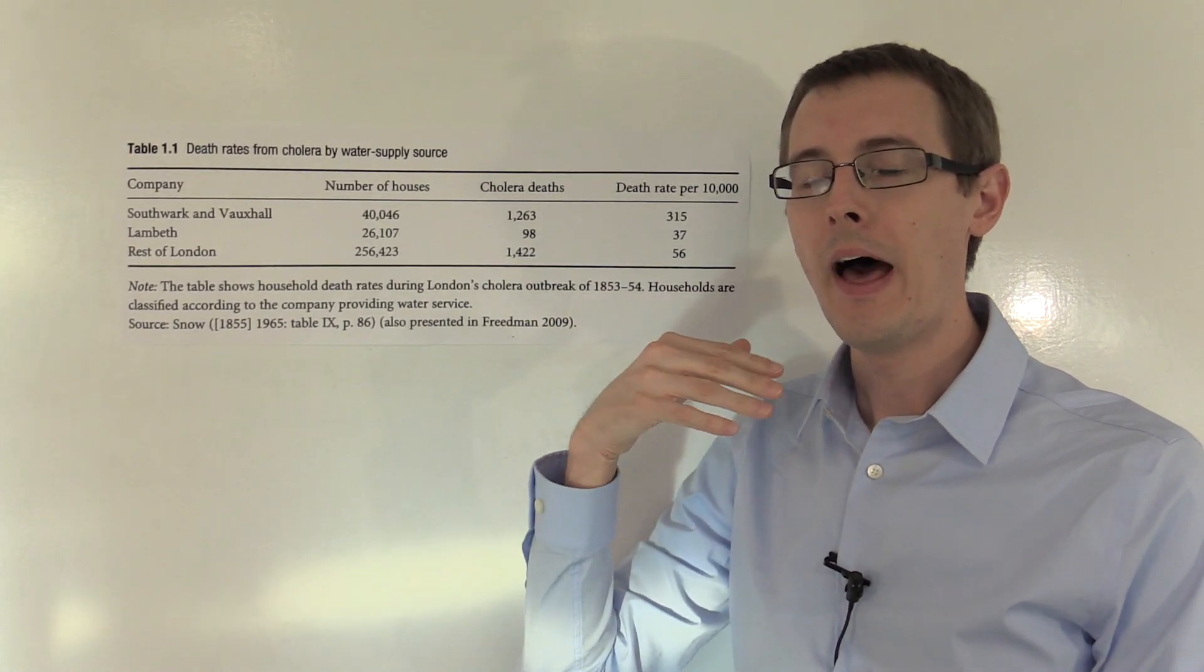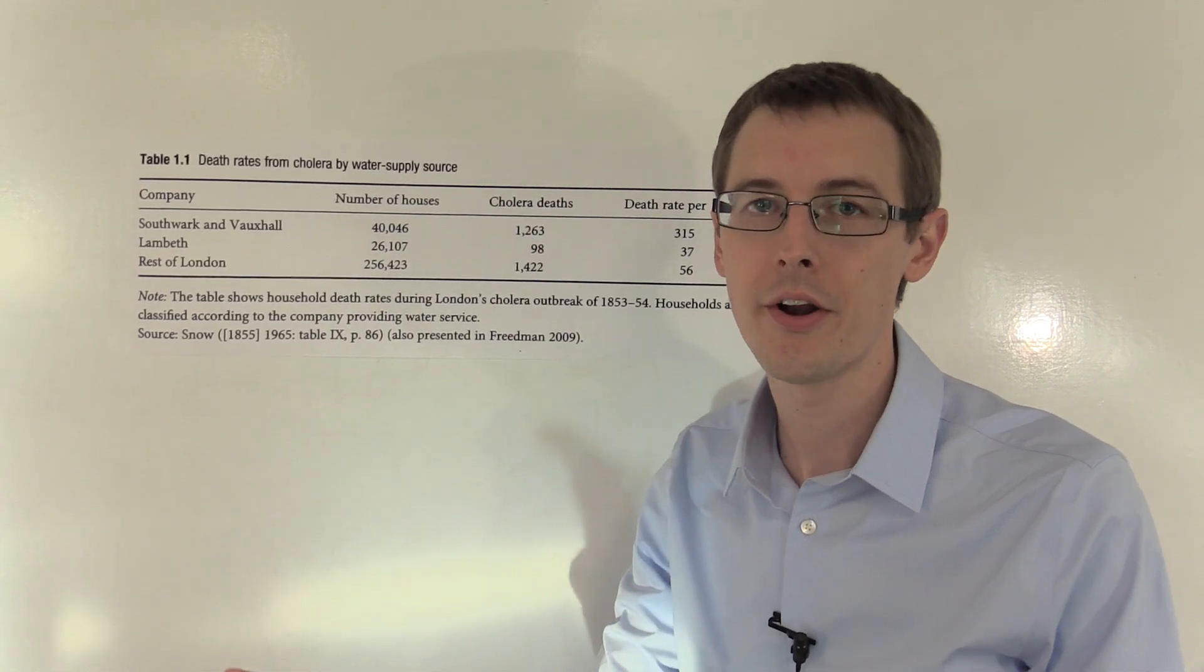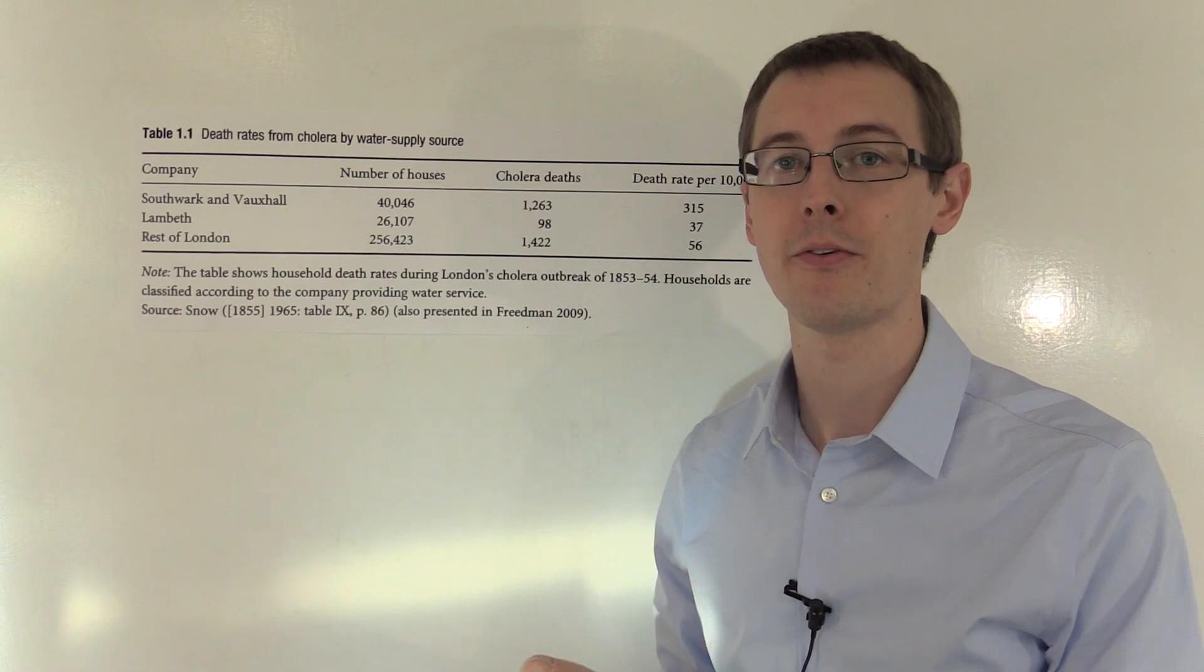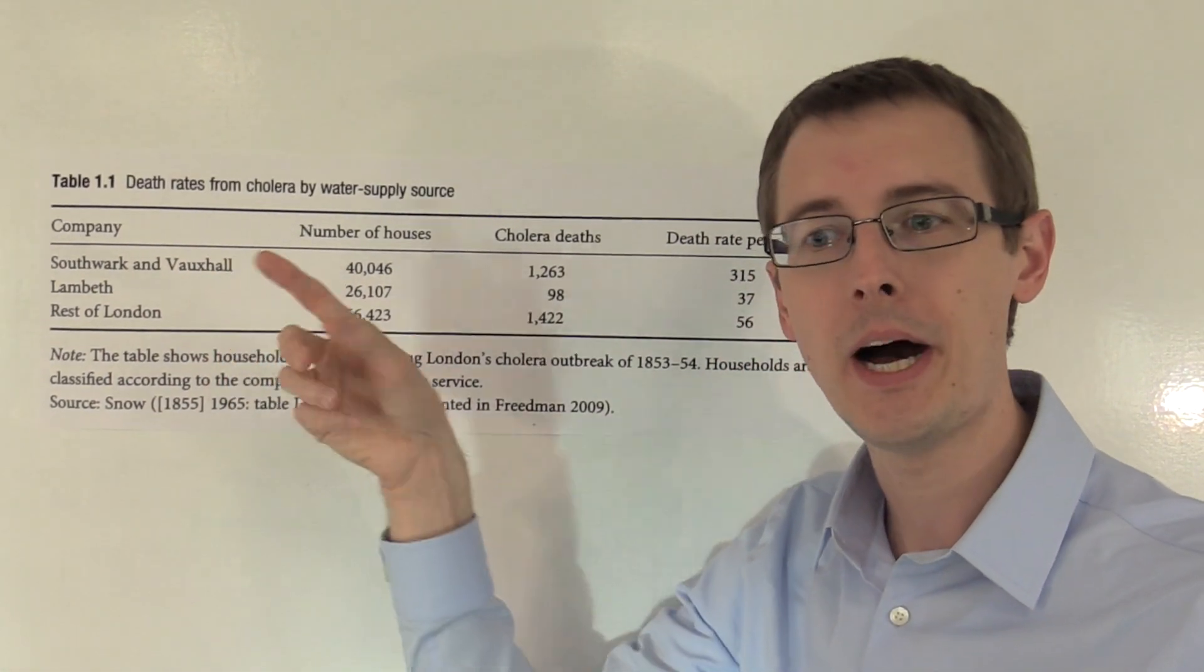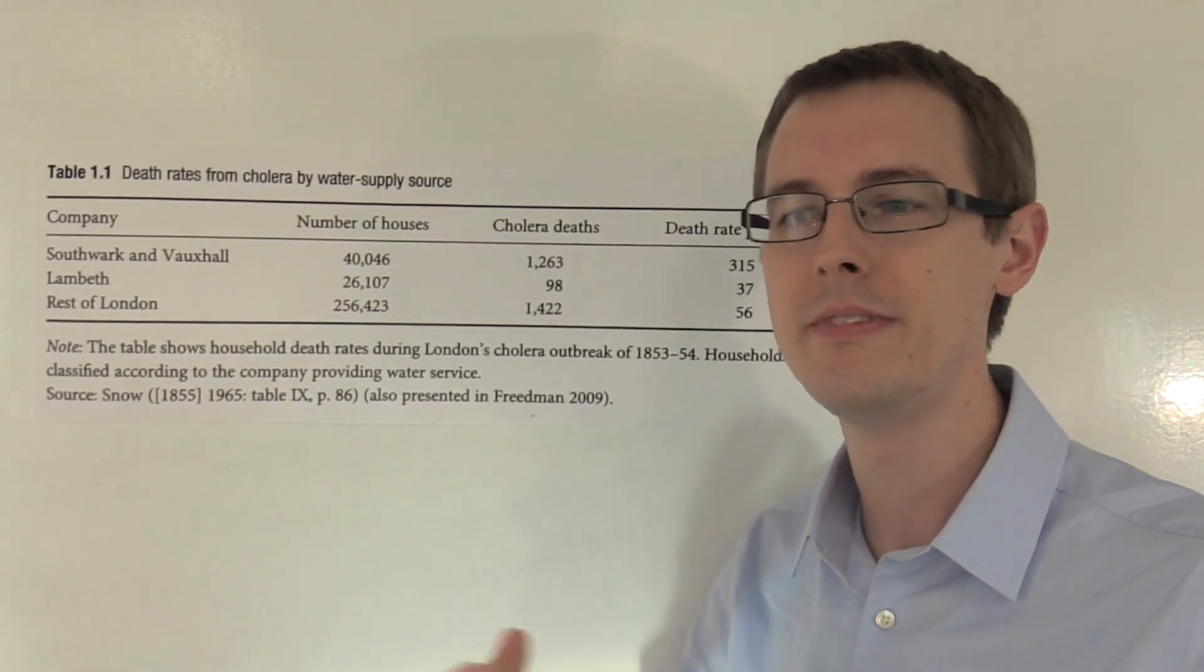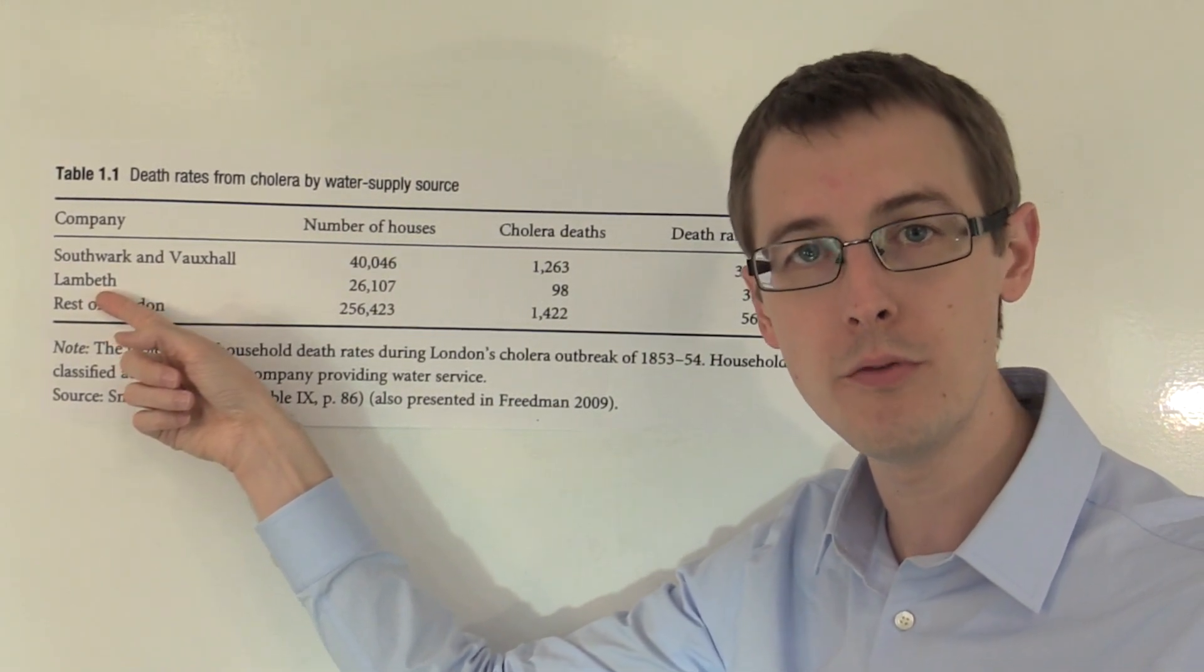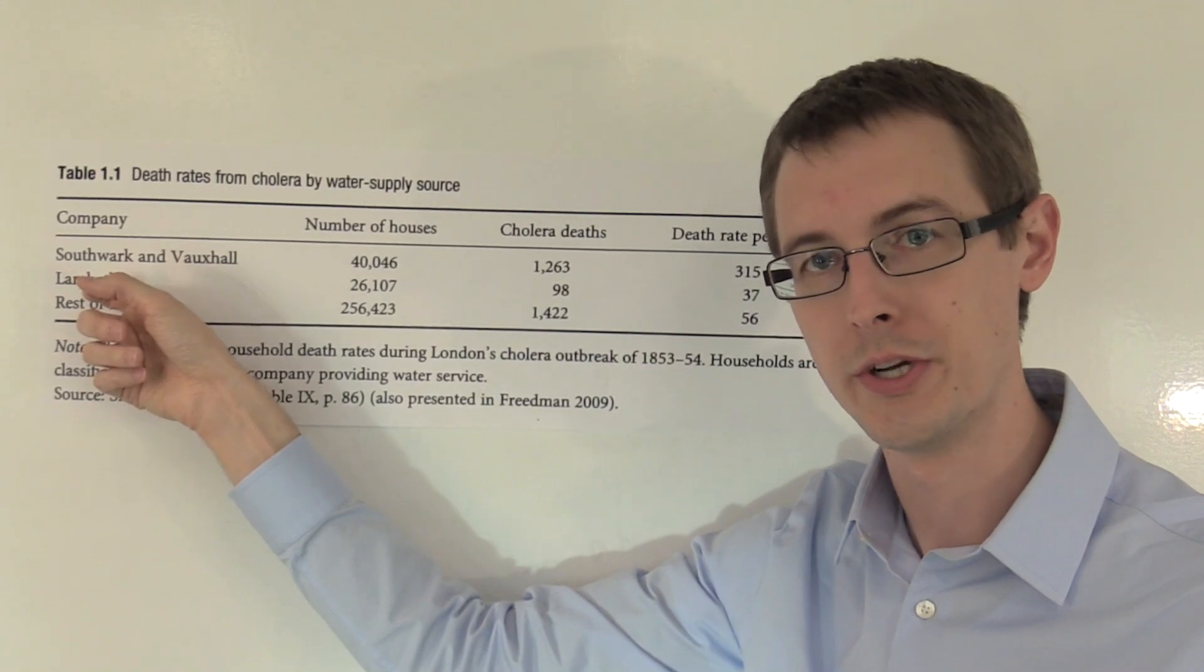At the time, people were just dumping sewage into the city, into the water, because we didn't know any better. And that was the same place that we were getting the water to drink from. Southwark and Vauxhall, their intake pipe was in the middle of the city, so it was taking in sewage, nasty, infested water, whereas the Lambeth Company, because they moved their pipe, they were getting clean water that wasn't ridden and filled with sewage.